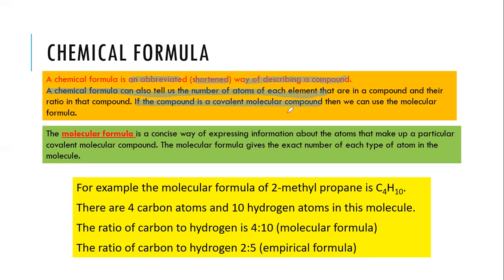If the compound is a covalent molecular compound, then we can use the molecular formula. To represent covalent structures, we use molecular formula. Molecular formula is actually a specific example of a chemical formula — it's a concise, brief way of expressing information about the atoms that make up a covalent molecular compound. The molecular formula gives the exact number of each type of atom in the molecule.